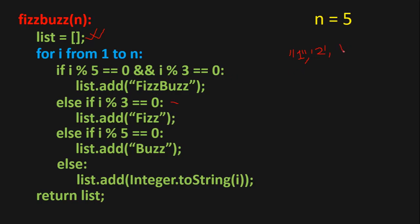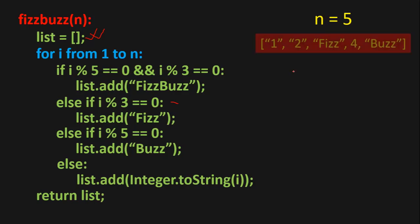For the next iteration i equals 4: 4 is not a multiple of 5 and not a multiple of 3, so we convert it to a string and add 4. For the next iteration i equals 5: 5 is a multiple of 5 and not a multiple of 3, so we add 'Buzz'. At the end we return the list.